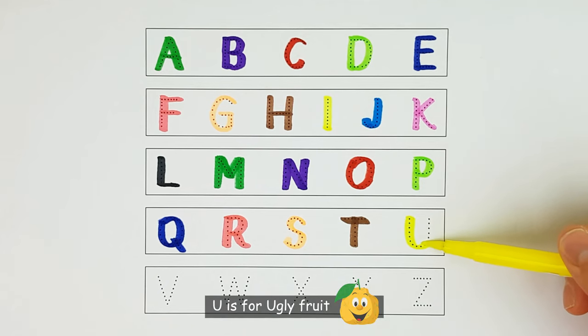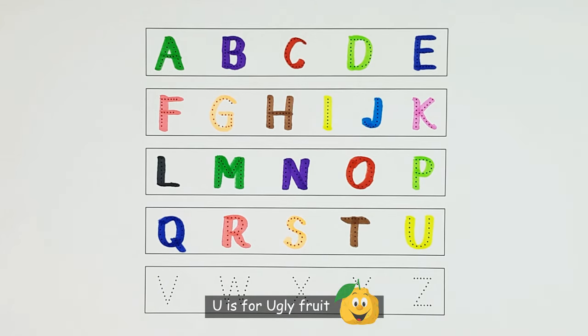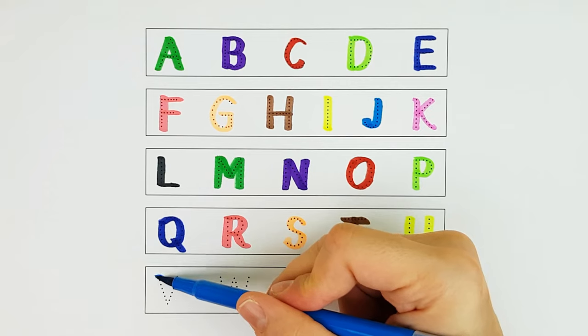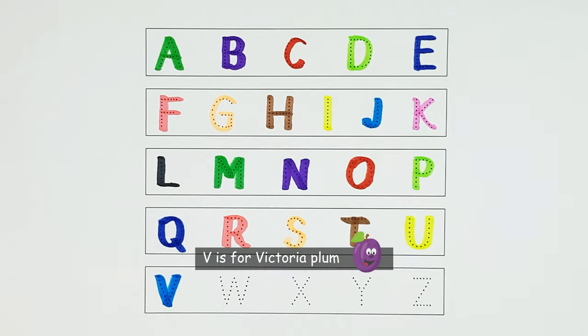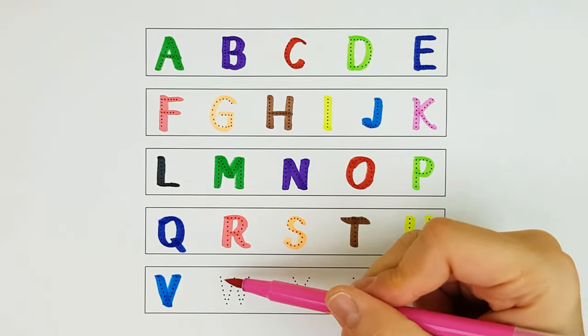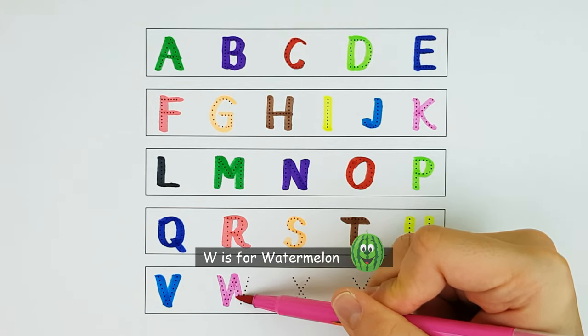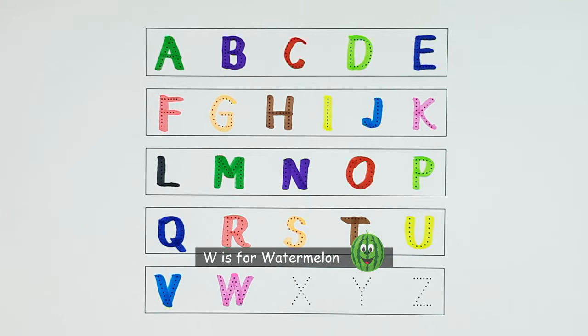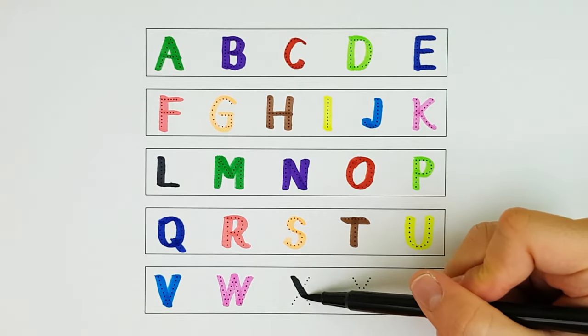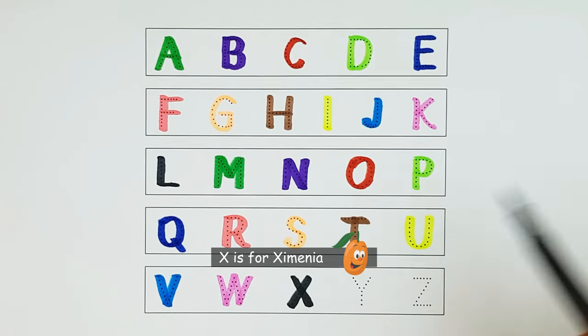U. U is for ugly fruit. U. V. V is for victoria plum. V. W. W is for watermelon. W. X. X is for zymenia. X.